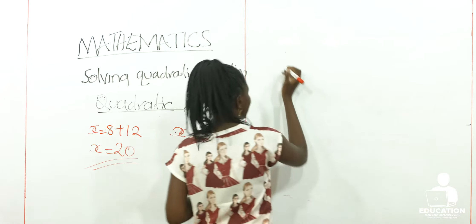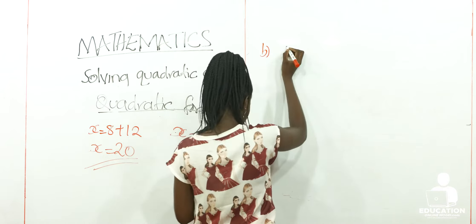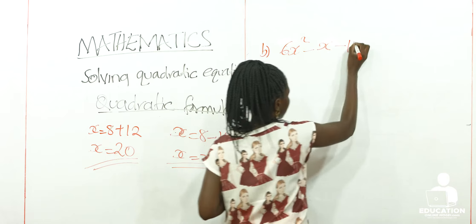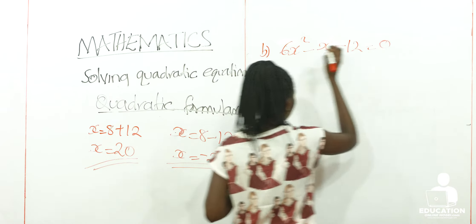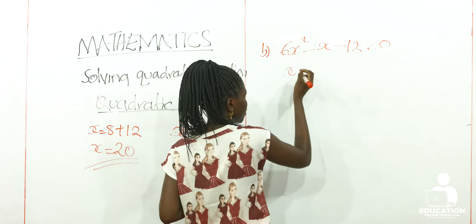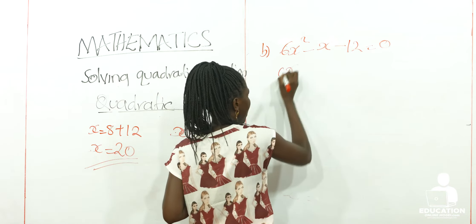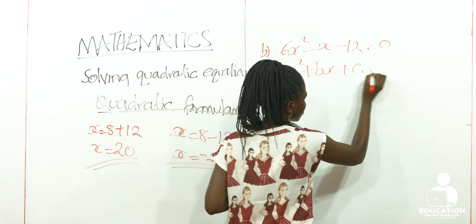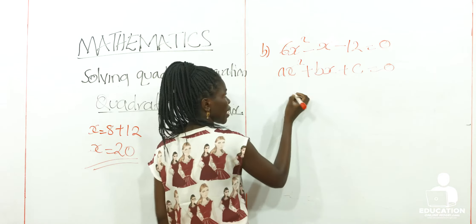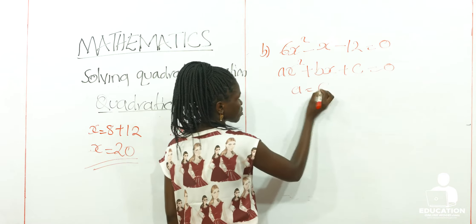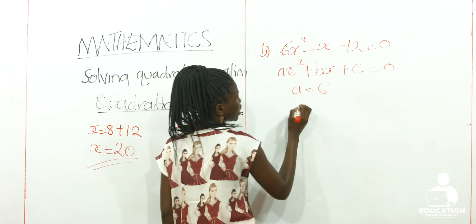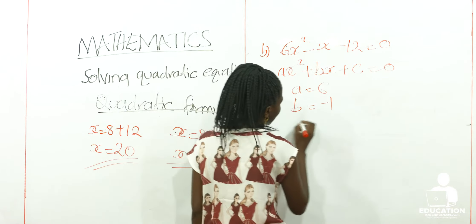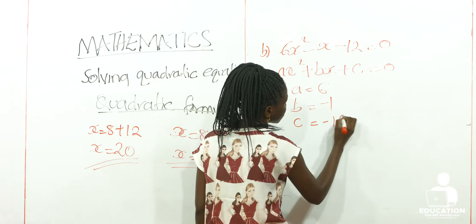Our next example: 6X² - X - 12 = 0. When we compare this with AX² + BX + C = 0, we get to know that our value of A is 6. Then our value of B is negative 1, and our value of C is negative 12.